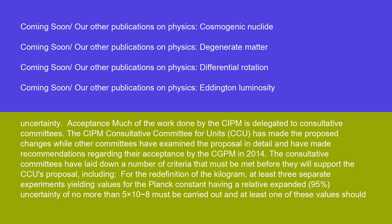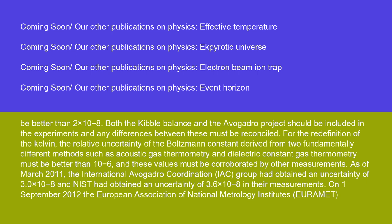Much of the work done by the CIPM is delegated to consultative committees. The CIPM Consultative Committee for Units (CCU) made the proposed changes, while other committees examined the proposal in detail and made recommendations regarding their acceptance by the CGPM in 2014. The consultative committees laid down criteria that must be met, including: for the redefinition of the kilogram, at least three separate experiments yielding values for the Planck constant with a relative expanded (95%) uncertainty of no more than 5×10⁻⁸ must be carried out, with at least one value better than 2×10⁻⁸; both the Kibble balance and the Avogadro project should be included. For the redefinition of the kelvin, the relative uncertainty of the Boltzmann constant derived from two fundamentally different methods (such as acoustic gas thermometry and dielectric constant gas thermometry) must be better than 10⁻⁶.